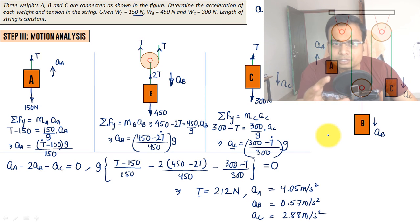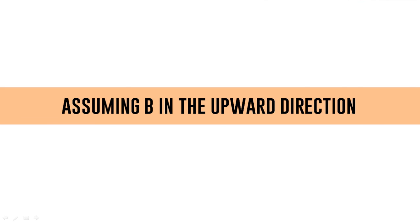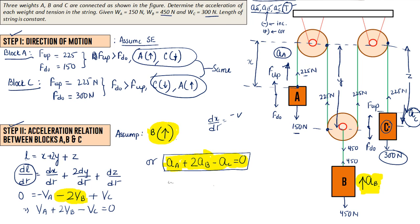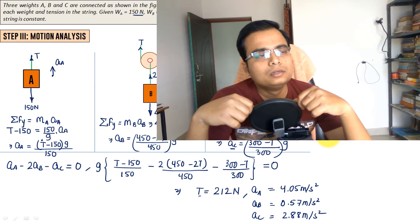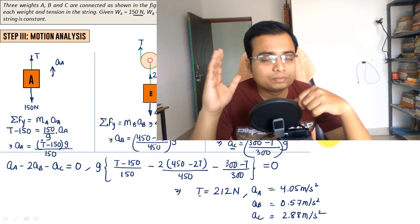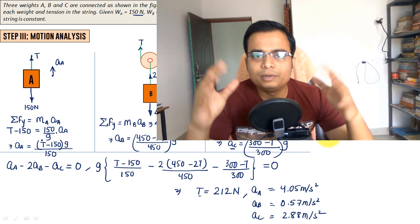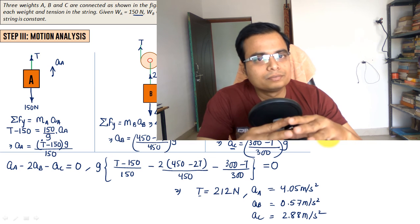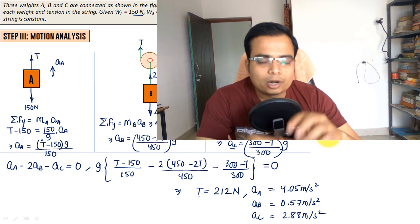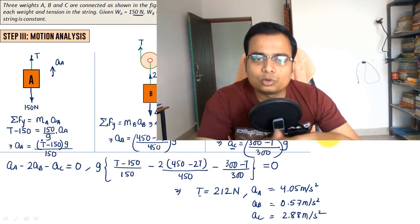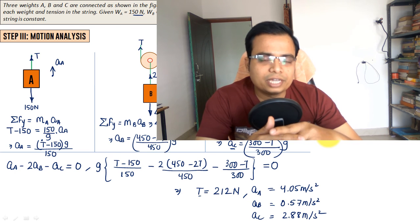If the direction of block B is assumed upward instead, the acceleration relationship and motion analysis change slightly, but the final answers are the same. In that alternate solution, the acceleration of block B works out with a negative sign, confirming that the downward direction was correct. If you have any doubts, write them in the comments. Share, like, subscribe, and press the bell icon for notifications. Until then, this is Antwita Manas signing off — take care, have a great day, and keep learning.